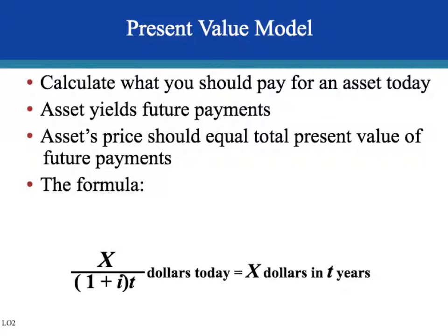In the present value model, we can rearrange the future value formula to get: present value equals the future expected value X divided by (1 plus the interest rate) to the t power, where t stands for number of years. This formula can help us determine how much we should pay for an asset today.